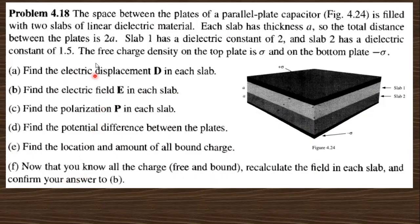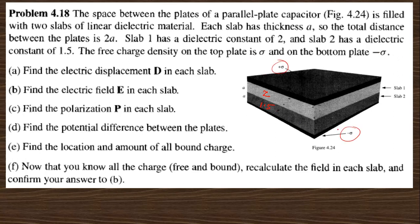Let us start today's session. We want to discuss question number 4.12 and 4.28, that is chapter 4 of this book. Let us start with question number 4.12, which says: the space between the plates of a parallel plate capacitor is filled with two slabs of linear dielectric material. Each slab has a thickness a, so the total distance is 2a. Slab 1 has dielectric constant 2 and slab 2 has dielectric constant 1.5.